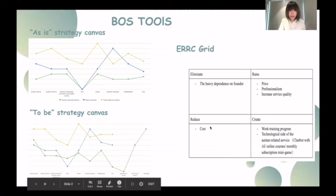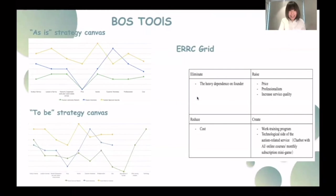In our updated strategy canvas, we added two factors to create new demand for customers and open a new market space for ACN. Based on the four action framework and strategy canvas, we recommend ACN create unique value by expanding into the technological side of services, which includes creating a virtual assistant, introducing online courses about autism, and developing mini games for autistic individuals.